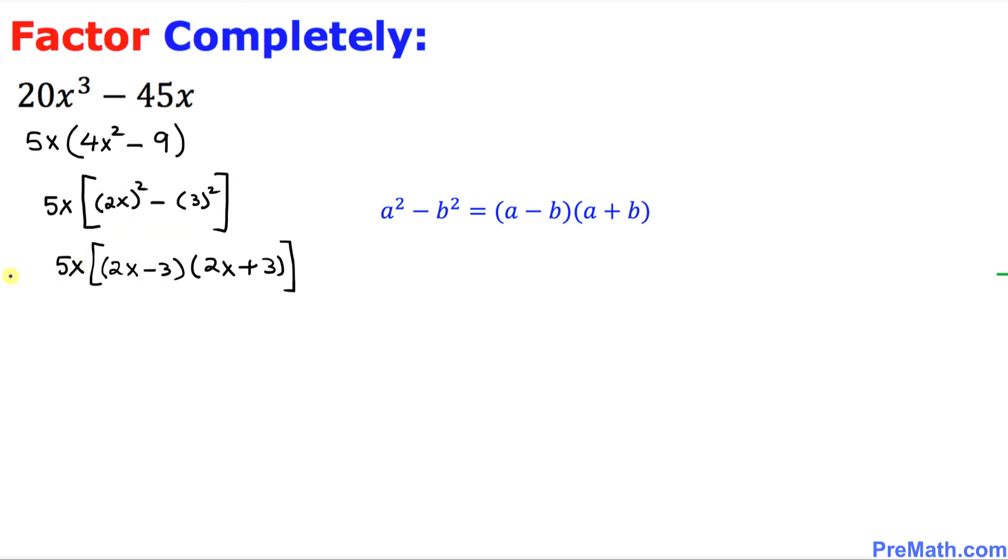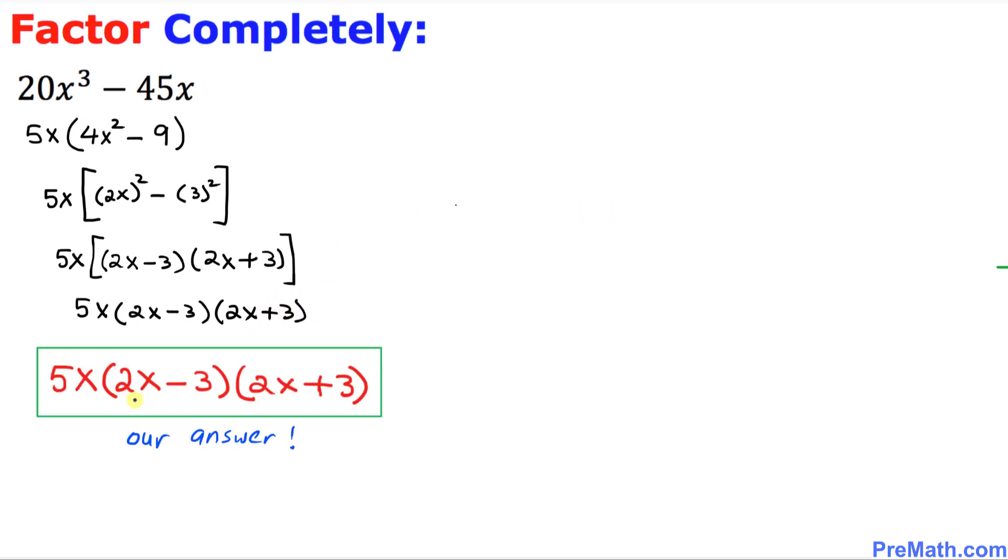So our complete factor is going to become 5x. We no longer need this big bracket. We can just simply write down 2x minus 3 times 2x plus 3. And hence these are our complete factors, and that is our final answer.